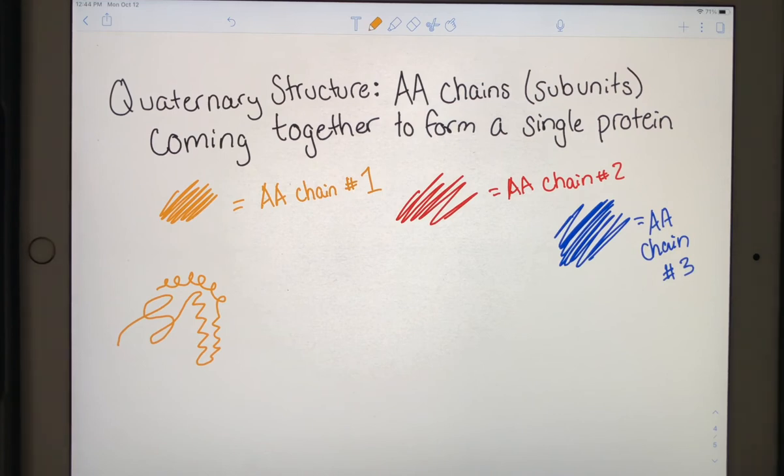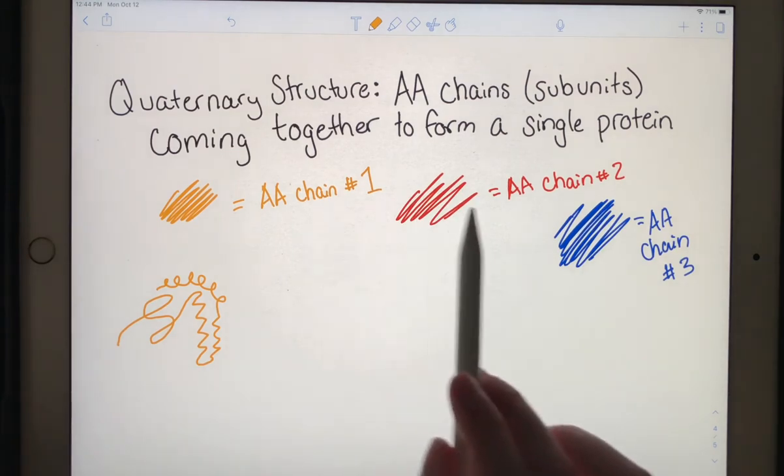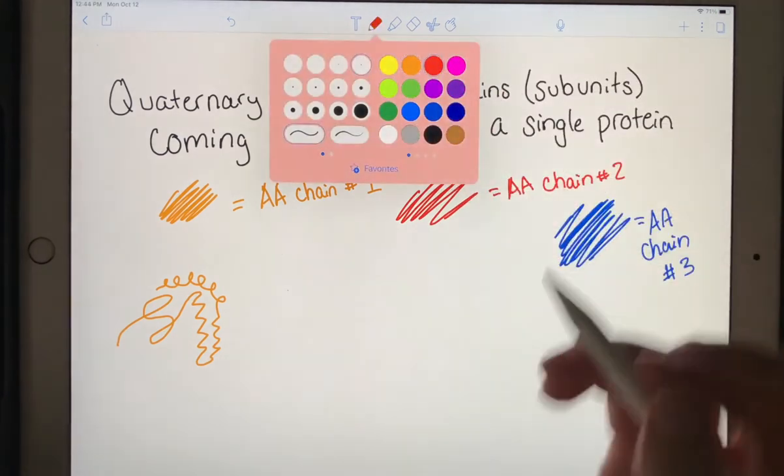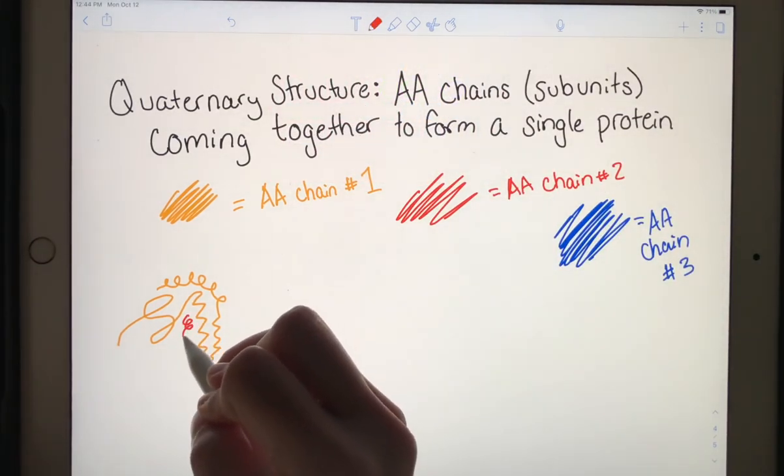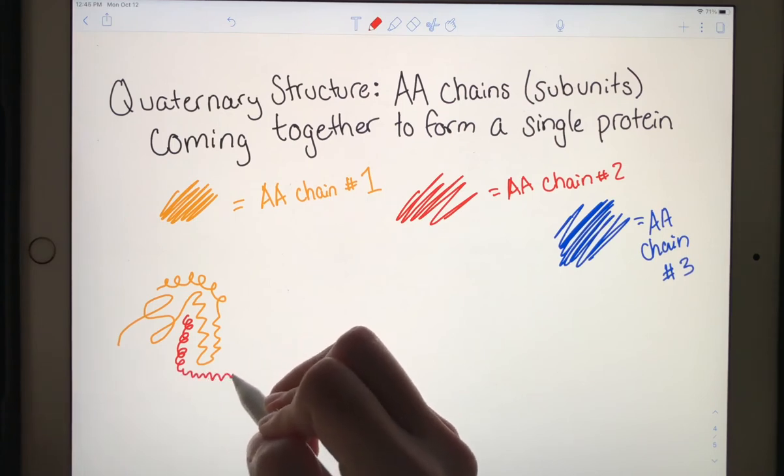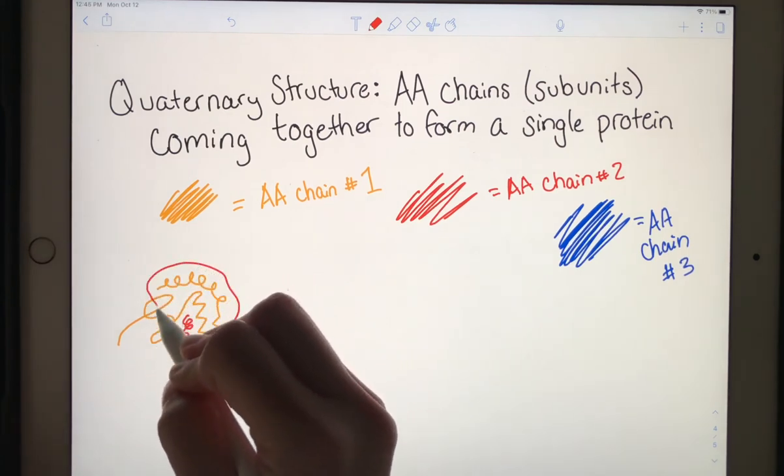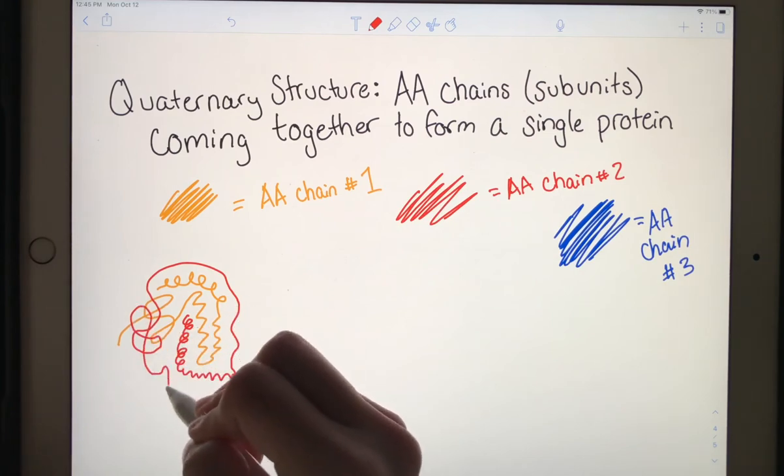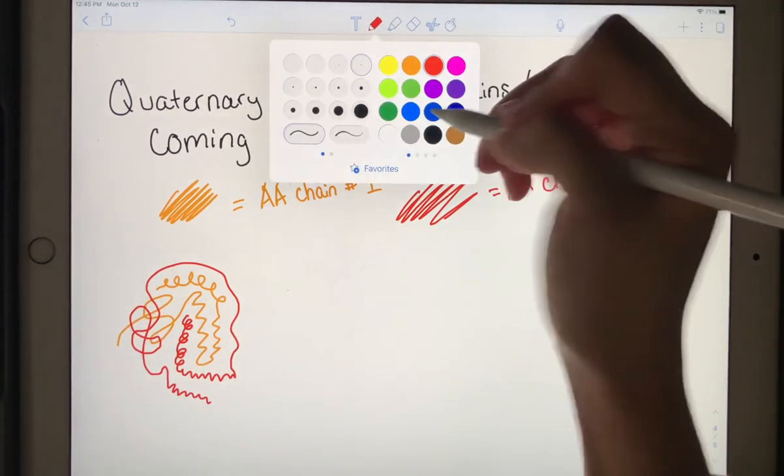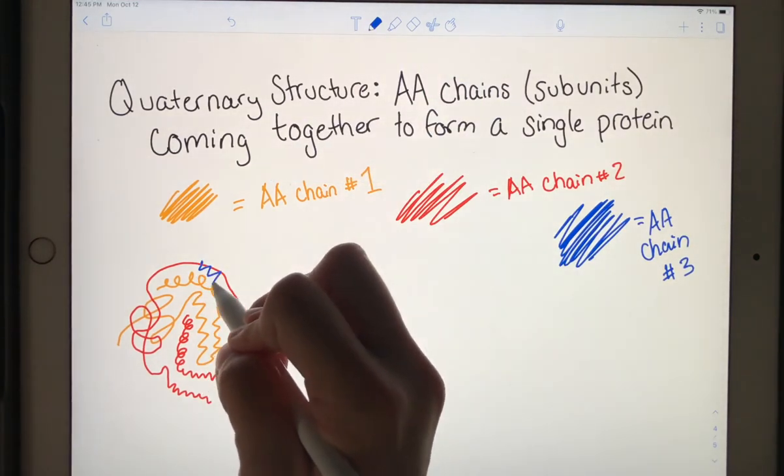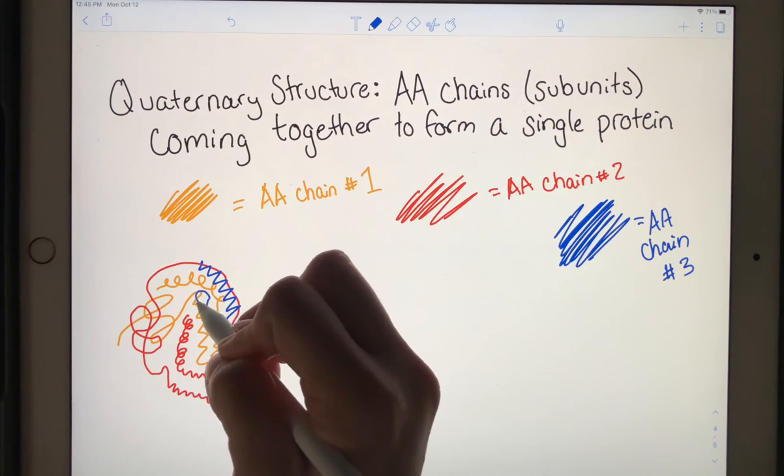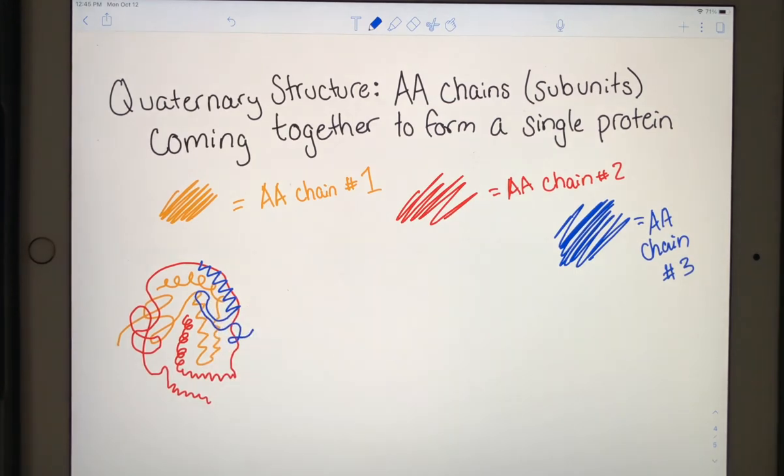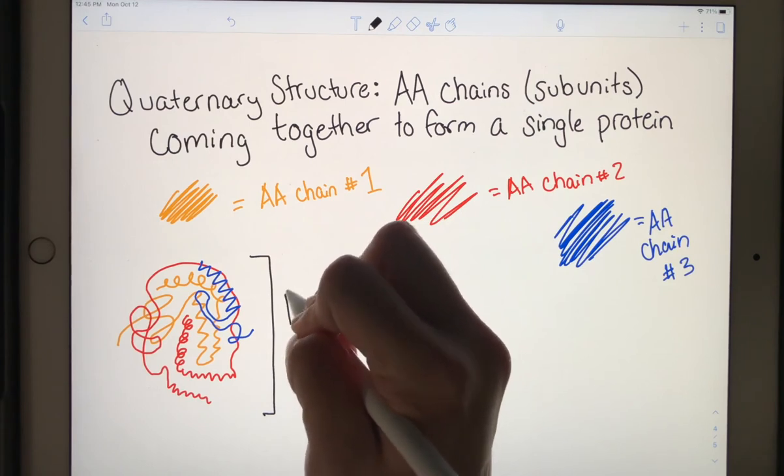But for quaternary structure, we're caring about the primary, secondary, and tertiary structure for multiple amino acid chains. And so they may form a unit. So maybe the red amino acid chain starts with an alpha helix, goes to a beta pleated sheet, crosses over, goes inside, goes outside. And maybe this blue one just stays towards the outside, but it wraps in, comes out, wraps in, comes out. This looks like modern art, but it's also an example of what a protein could look like.